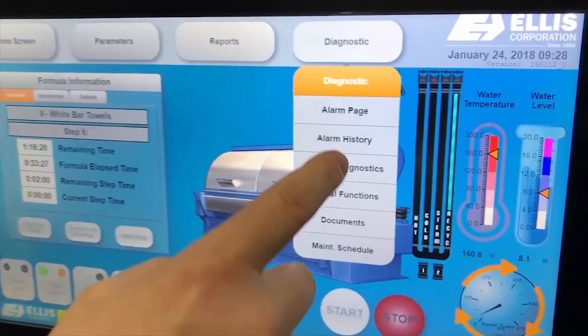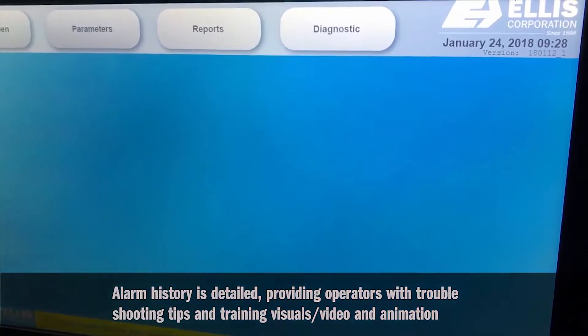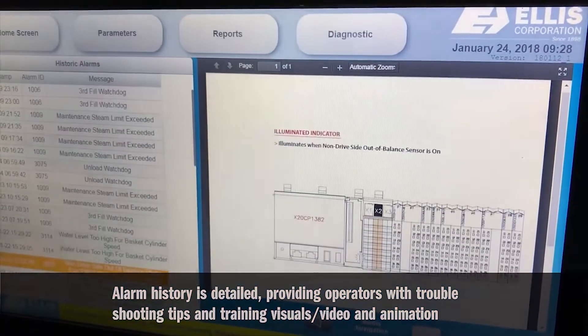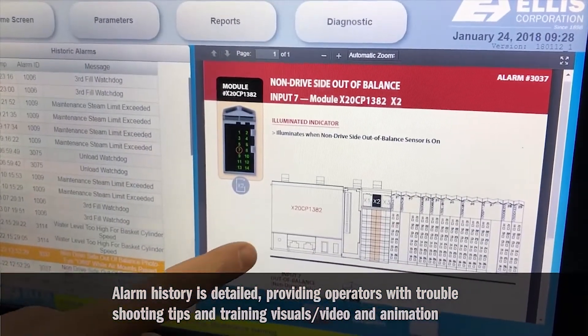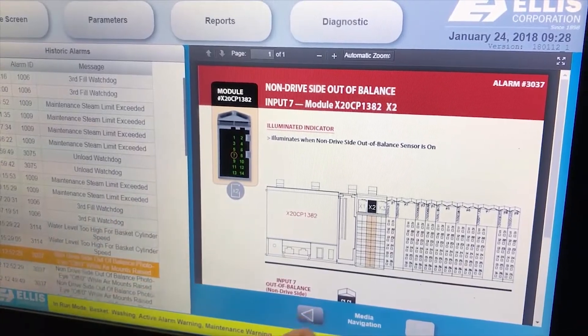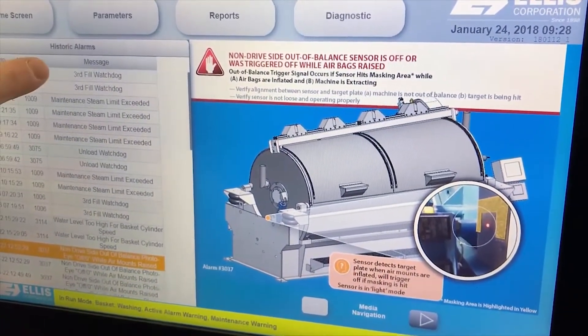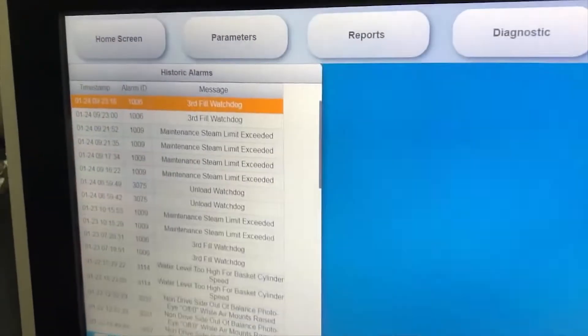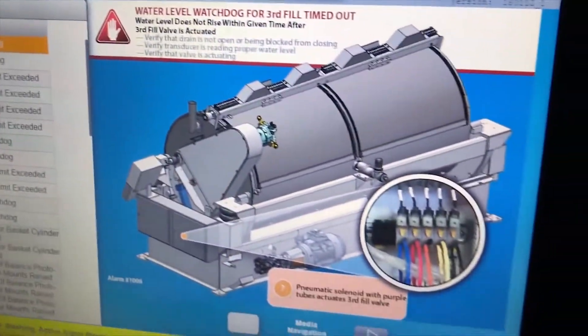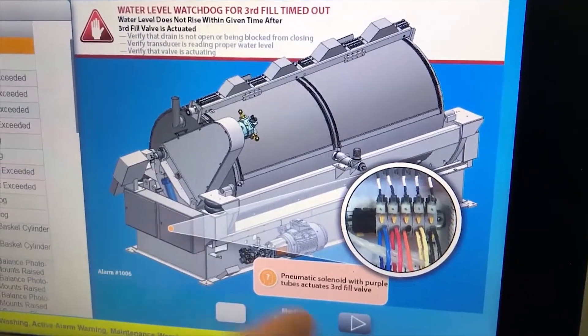Yet it's in dealing with unplanned maintenance, where a short stoppage can become extended downtime, that Uptime really shines. By constantly monitoring the machine, Uptime instantly recognizes when trouble occurs, typically before a person would notice and before any symptoms appear on the textiles, and sounds the alarm.